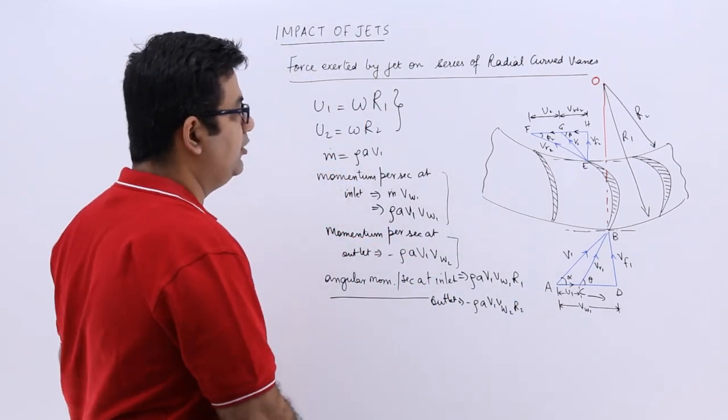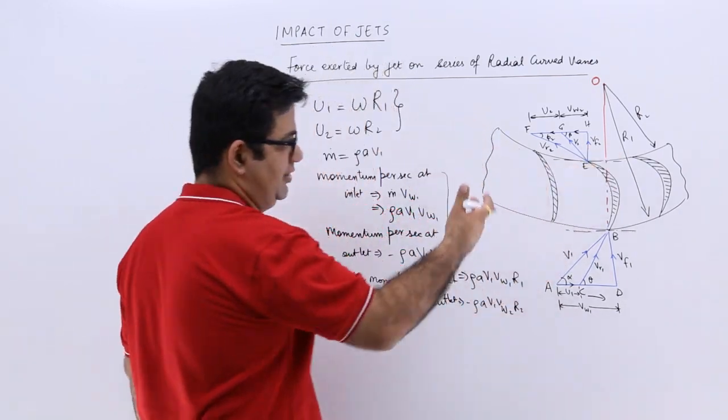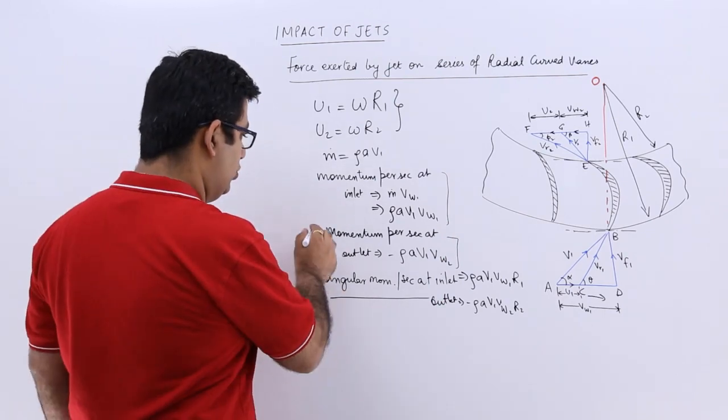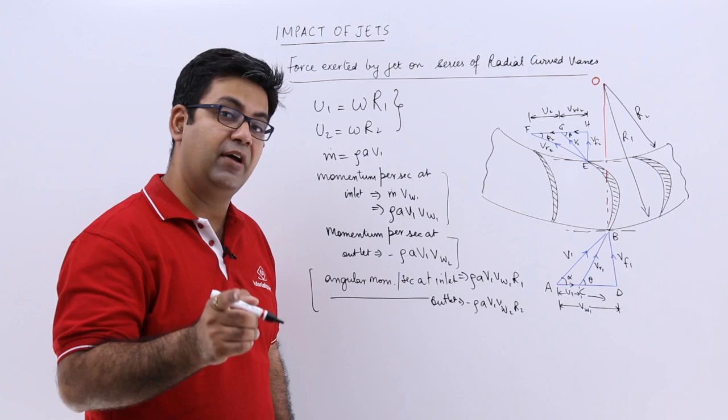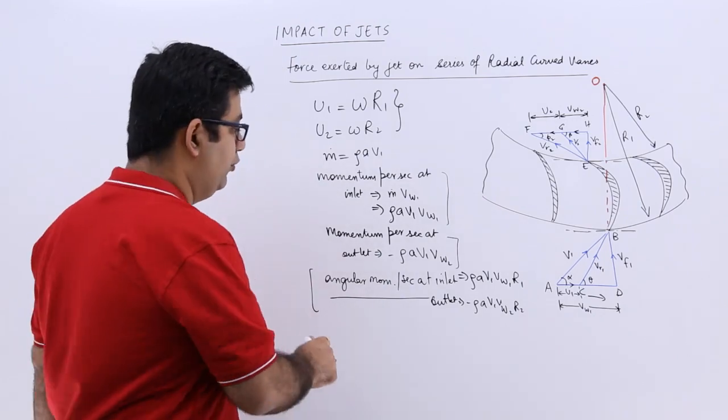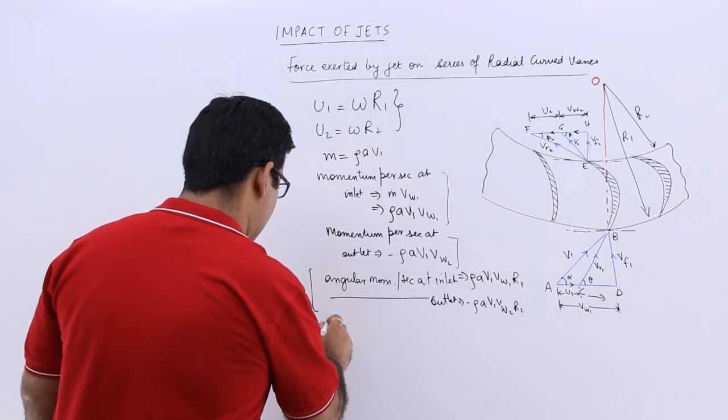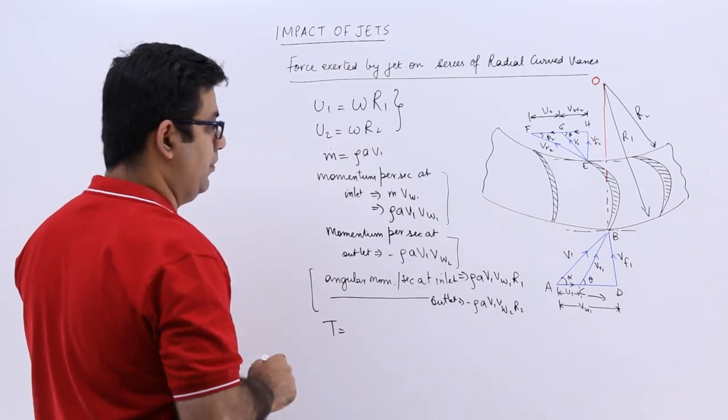Now, to find out the torque on this wheel, I would have to take the difference of the angular momentum. The rate of angular momentum change would give you the torque exerted. Torque T equals the rate of angular momentum change.